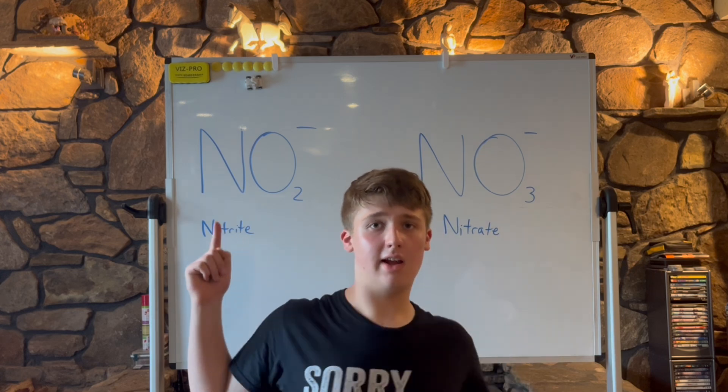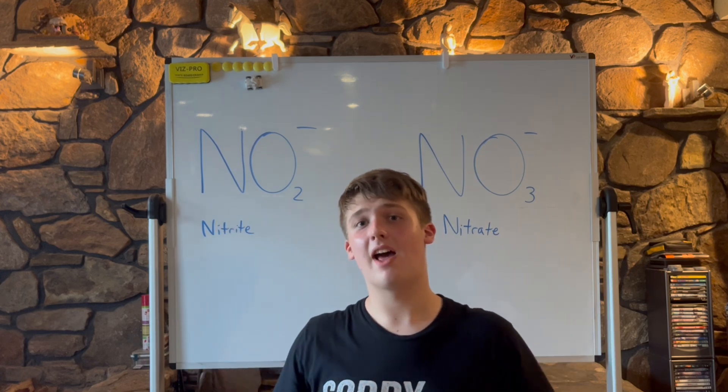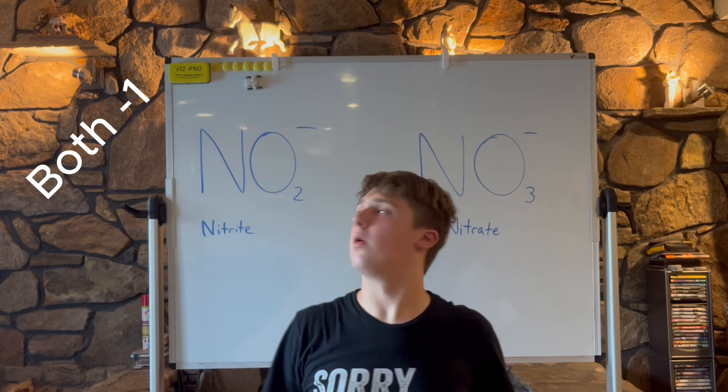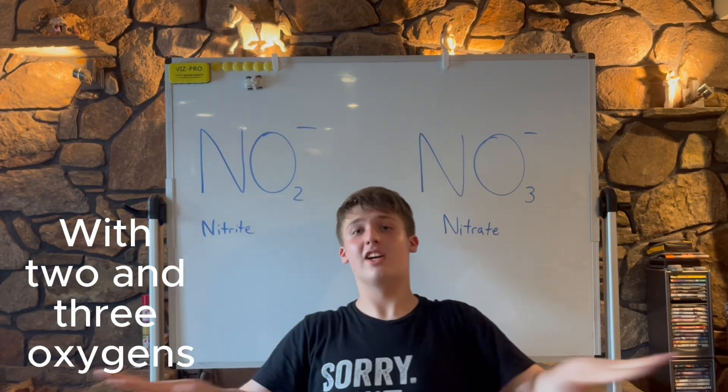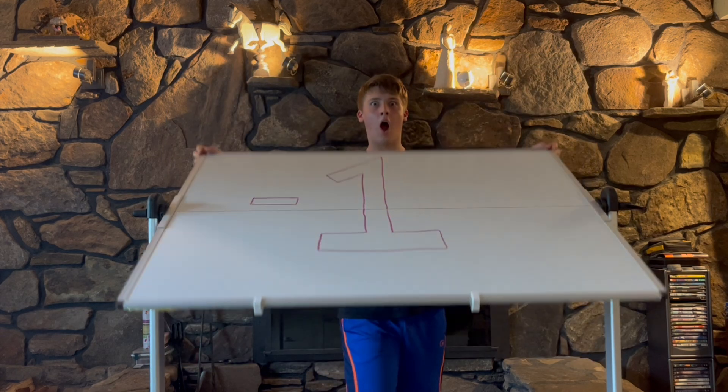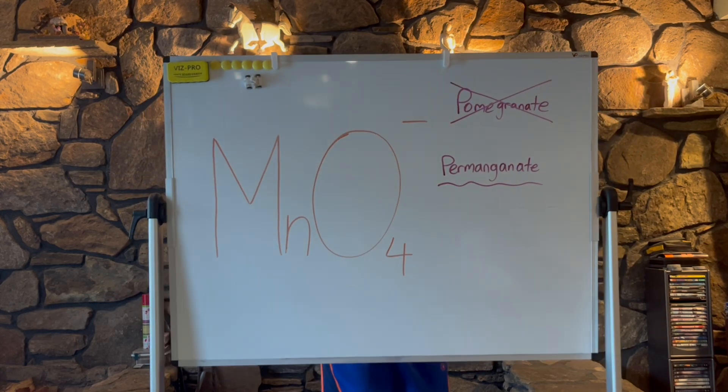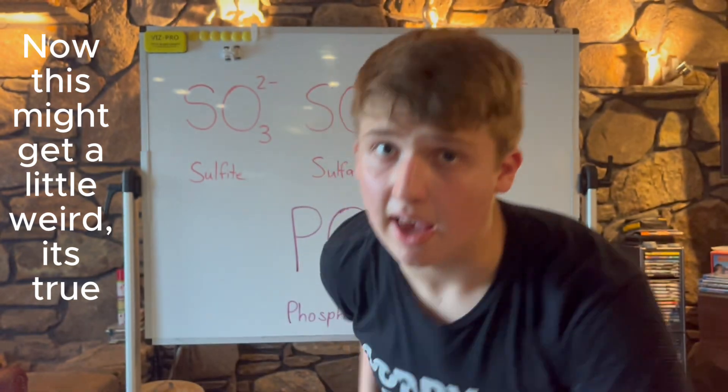Now nitrite and nitrate follow the same pattern as before. Both minus one with nitrogen at the center and two or three oxygens. Another minus one ion that looks the same: MnO4, that's permanganate. Now this might get a little weird.